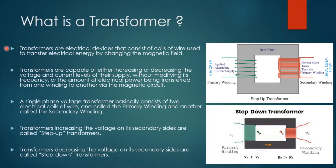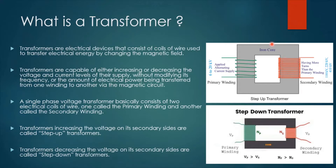So what is a transformer? It is an electrical device that consists of coils of wire used to transfer electrical energy by changing the magnetic field. Transformers are capable of either increasing or decreasing the voltage and current levels of their supply without modifying its frequency or the amount of electrical power being transferred from one winding to another via the magnetic circuit. A single phase voltage transformer basically consists of two electrical coils of wire, one called the primary winding and another called the secondary winding. We can see here a single phase transformer which consists of coils on both sides — the primary and the secondary — and these coils are wrapped around an iron core.